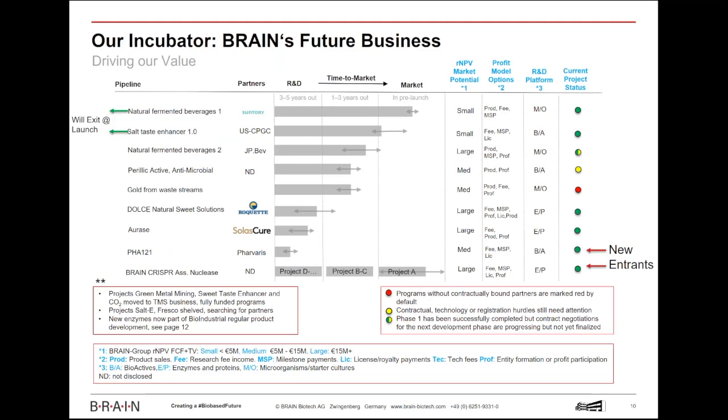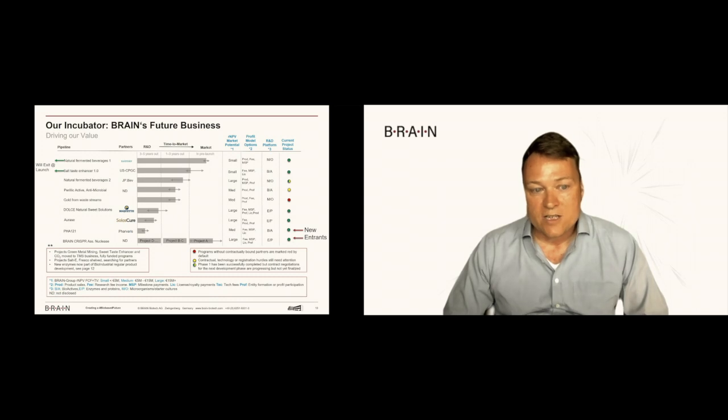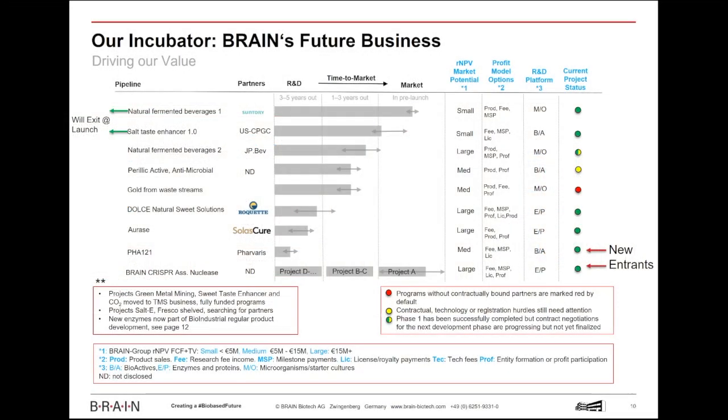That's our incubator pipeline. And the incubator pipeline, according to most analysts but also to our shareholders, defines the biggest part of the value of Brain today. I don't want to touch on all the projects. I just want to say you have two projects which will likely exit in the next six to nine months because they're basically ready to launch at the market. And we have two projects I just explored with PHA-121 and the Brain CRISPR associated nuclease which will enter the pipeline. But you can see that small projects exit and medium size to large or large to very large potentially projects will enter the pipeline. So the overall value of our development pipeline of the incubator has increased quite significantly.